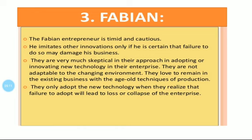They never adopt new methods for their production process. They simply stick to the methods already used. For example, Fabian Entrepreneurs stick to doing traditional gold jewelry business and they won't try to add new elements to their business.